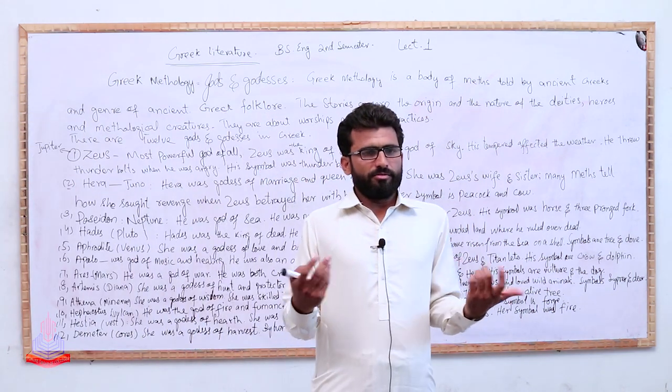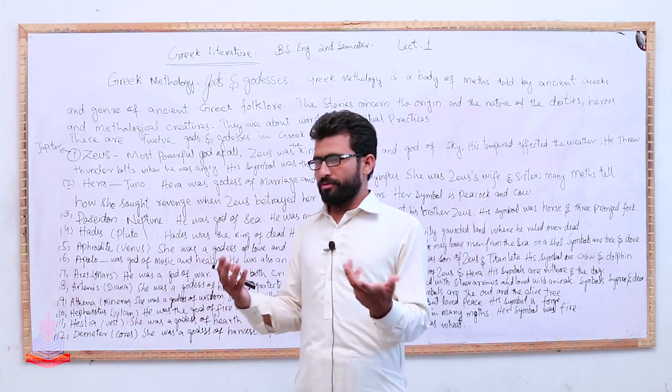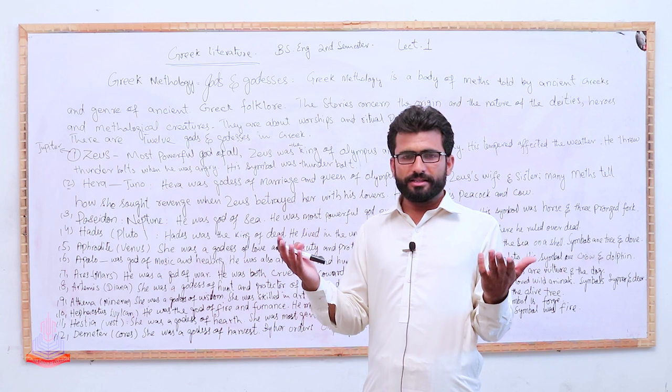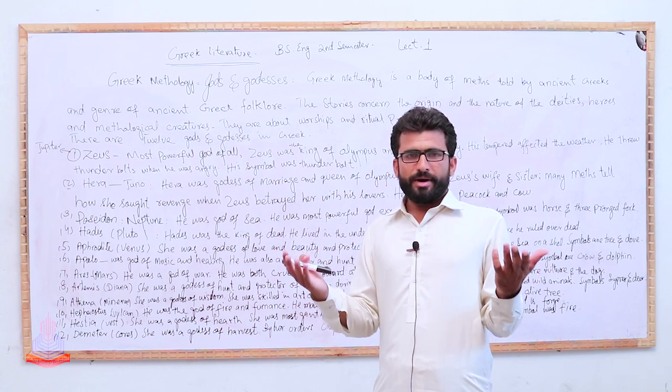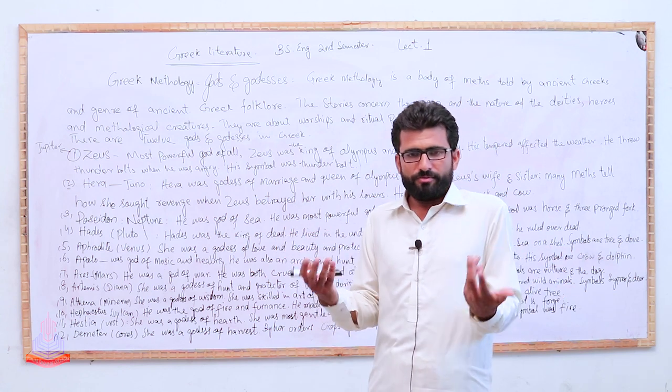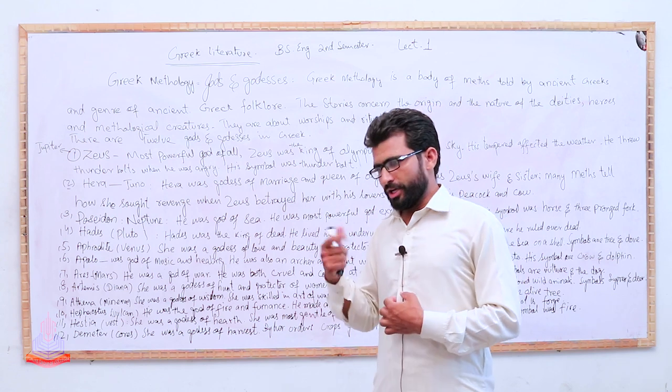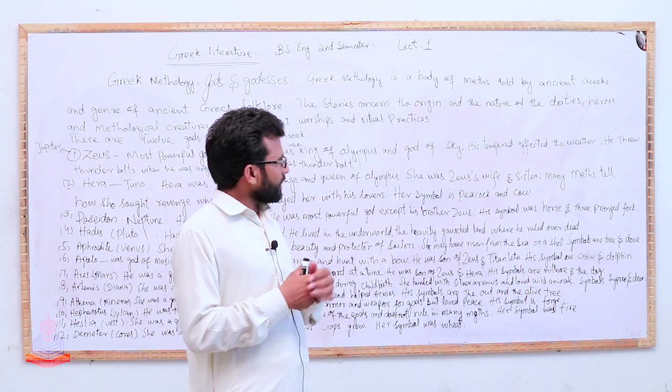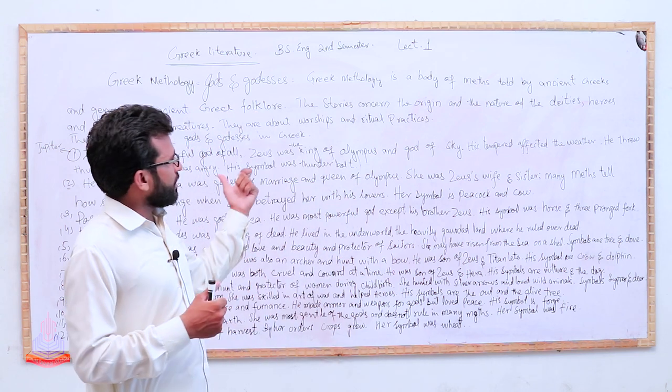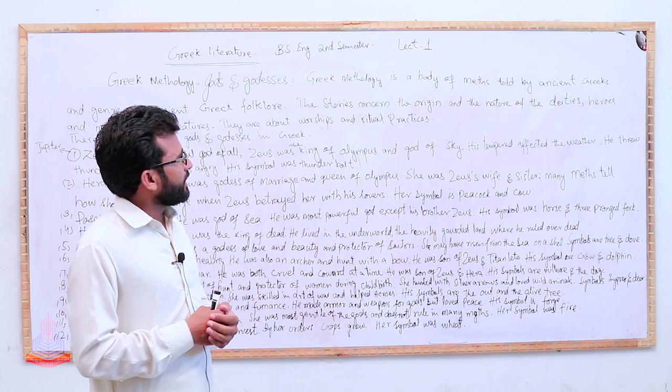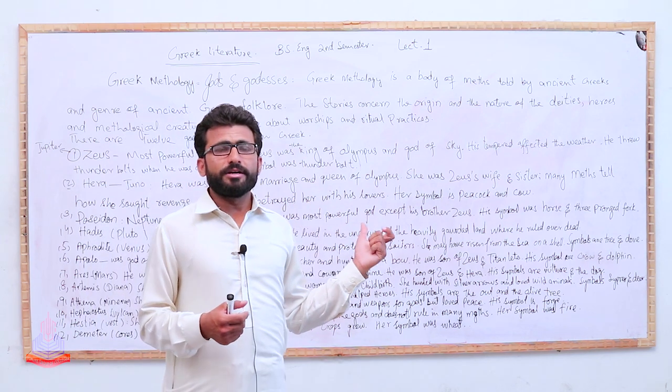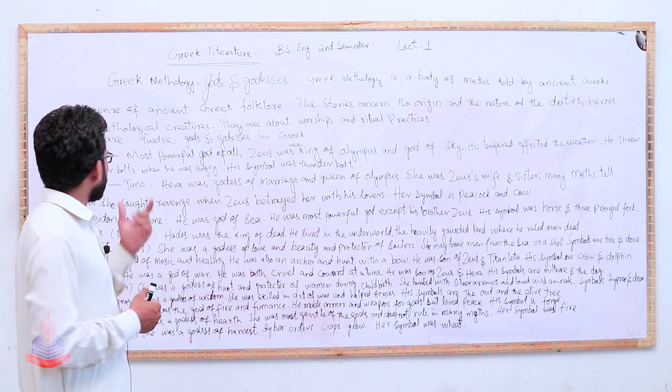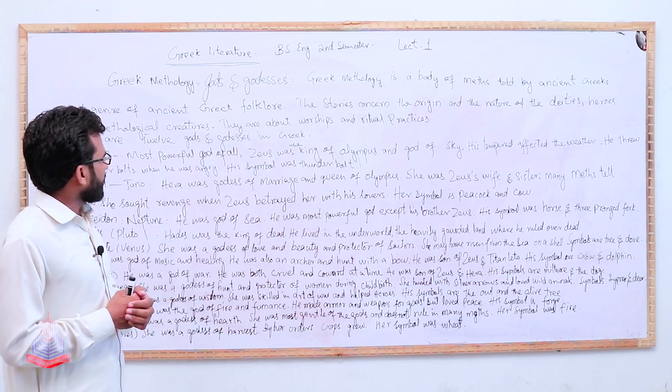His temper affected the weather. He threw thunderbolts when he was angry. While we see that when we got angry we do something wrong with the others. By the cause of them we are angry and we show our reaction to them. In the same way, when this god Zeus got angry, his temper affected the weather. He threw thunderbolts when he got angry.